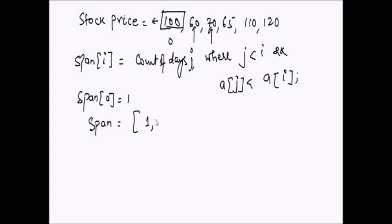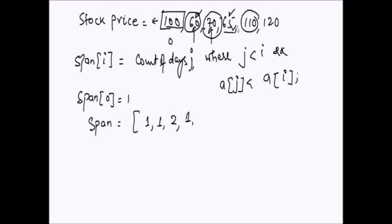For day 1 (price 60) there is no prior day with a lower price, so span is 1. At 70 there was one consecutive day with price 60, so span is 2. At 65, even though 60 is less, 70 is greater and breaks the consecutive streak, so span is 1. At 110, prices 65, 70, 60, 100 are all less — that gives span of 5.